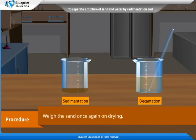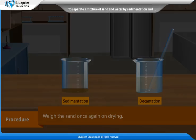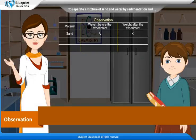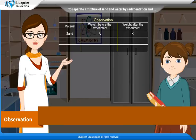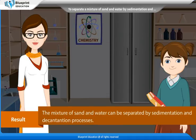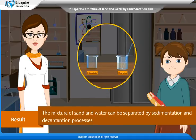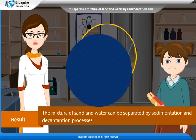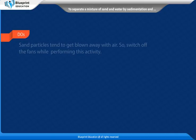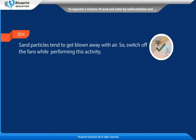Weigh the sand once again after drying. Observation — record the weight of sand before and after the experiment. Result: The mixture of sand and water can be separated by sedimentation and decantation processes.